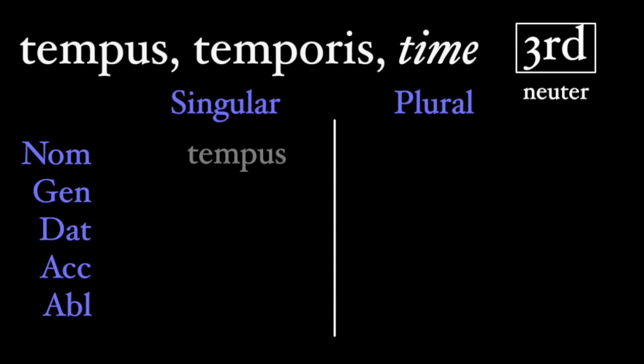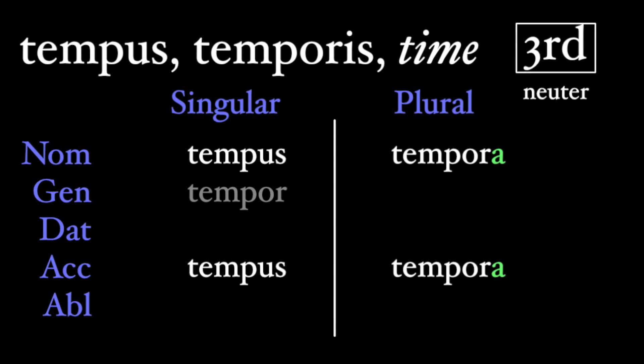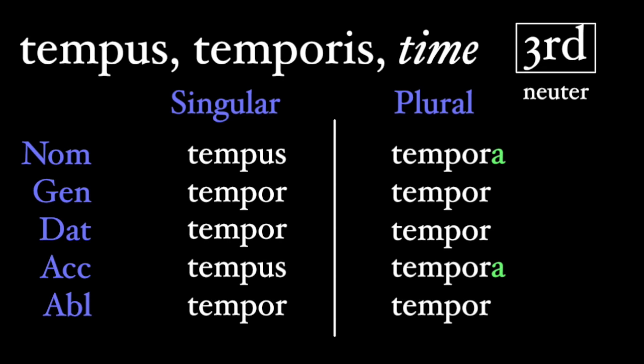With those two rules applied, we can fill in the rest of our third declension endings. For words like tempus, the regular third declension endings apply: -is for the genitive, -i for the dative, and -e for the ablative. Then the plural of these are -um in the genitive, and -ibus in the dative and ablative. This is a third declension word, so the nominative is a blank — we get the stem of the noun from the genitive case. So tempor- is what we put the endings onto.